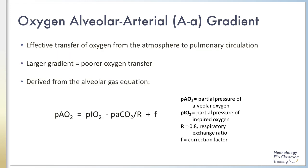The A-a gradient is derived from the alveolar gas equation, in which PAO2 is the partial pressure of alveolar oxygen, PiO2 is the partial pressure of inhaled oxygen, R is the respiratory exchange ratio, and F is a correction factor.